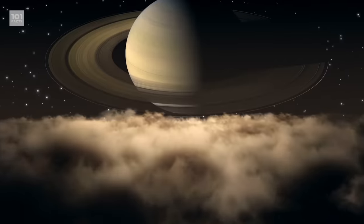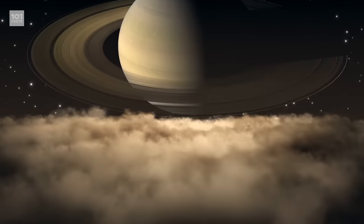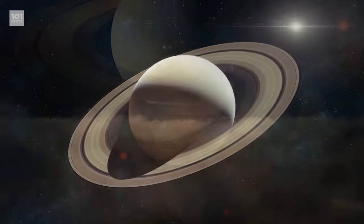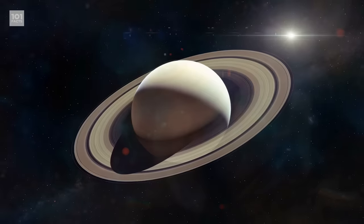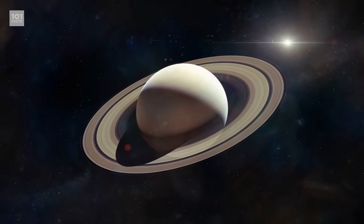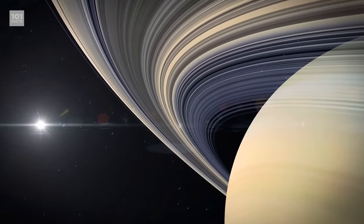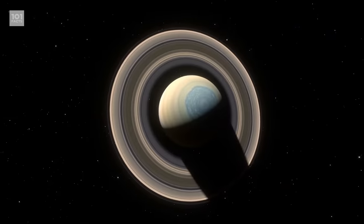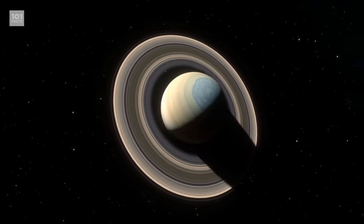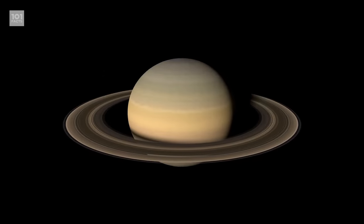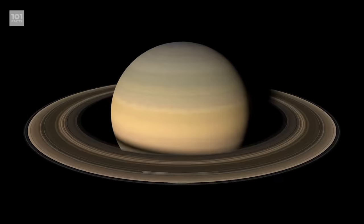The next planet from the sun is Saturn. It's the second largest planet in our solar system after that behemoth Jupiter, and is roughly 9.5 times the size of the Earth. Despite being that massive, Saturn is the least dense of all the planets in the solar system. Like Jupiter, it's mostly made of hydrogen and helium, but Saturn is way less dense. In fact, on average, it's less dense than water.